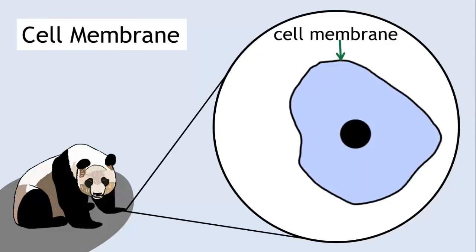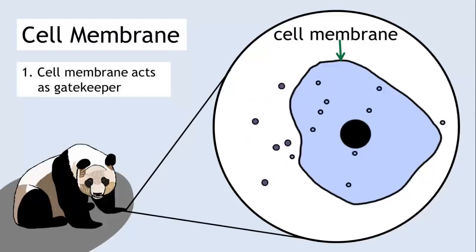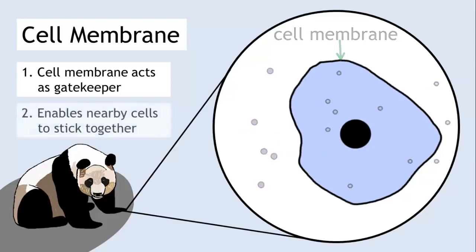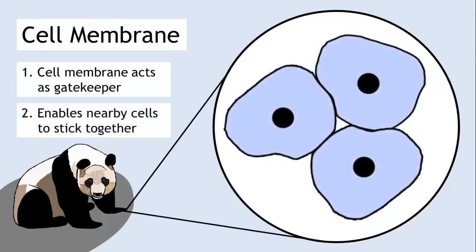The cell membrane, which is the border of the cell, acts as the gatekeeper and controls what enters and exits the cell, as well as enabling neighbouring cells to stick to one another.